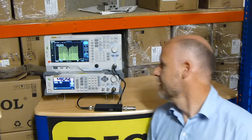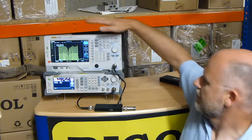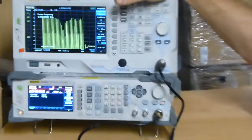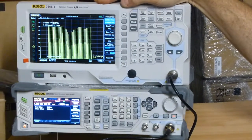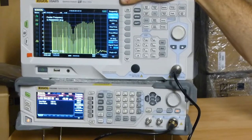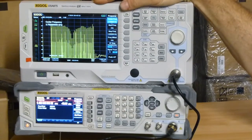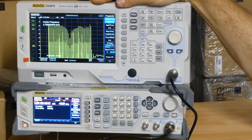So on the instrument stand today, what we've got here is the DSA875. This is a 7.5GHz version of the DSA815, hot off the press, just out. Regal have released a 7.5GHz version.